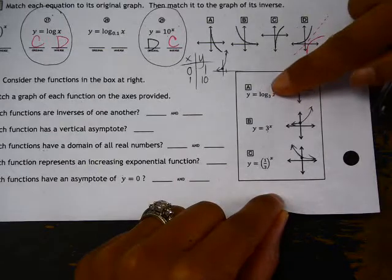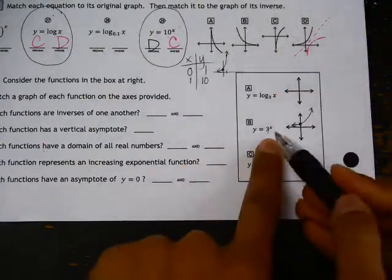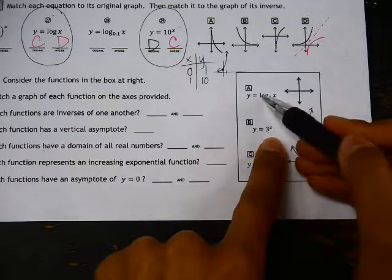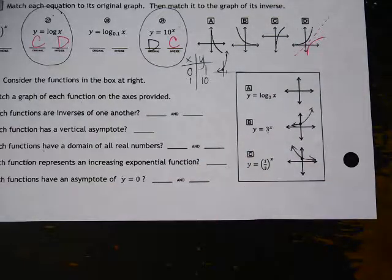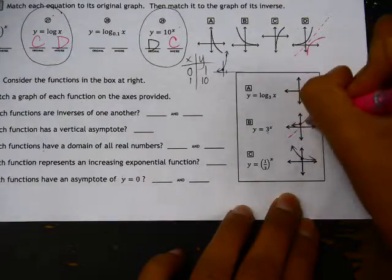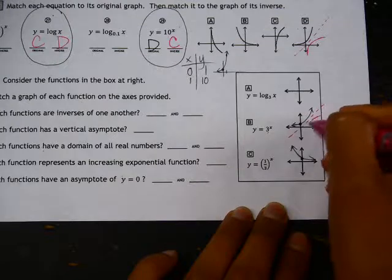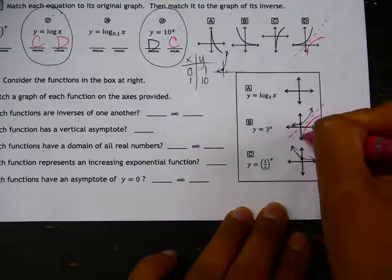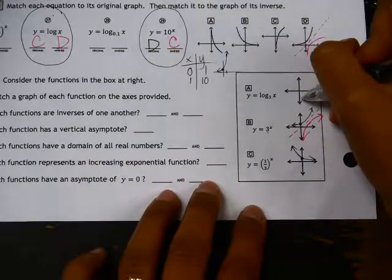Now, in order to graph y equals log base 3 of x, since we know that graph b is the inverse of graph a, we can see what we get when we reflect this graph over the line y equals x. So, we'll have a graph like that. So, if I copy that over here.